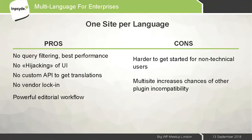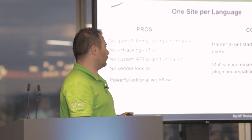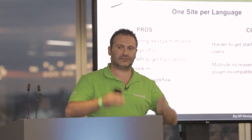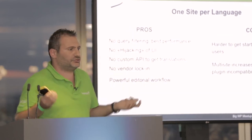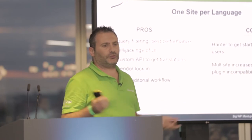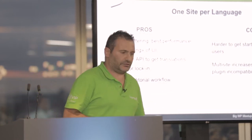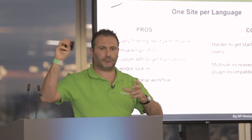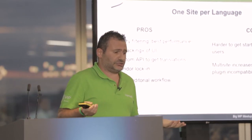Finally, the one site per language approach. The pros are that it doesn't have any of the cons of the other approaches. Because it uses multi-site, every website is isolated from the others. When you are on the English website, you just see the English posts. The plugin has nothing to filter, nothing to modify in the query — it just works. We don't need to change anything in the WordPress UI. The editor who wants to edit the English posts just logs in and edits. There might be a metabox or a Gutenberg module to connect posts together, but it just works.